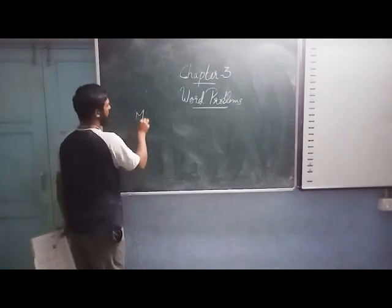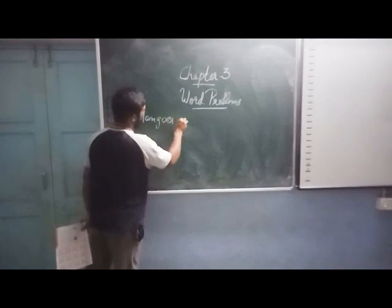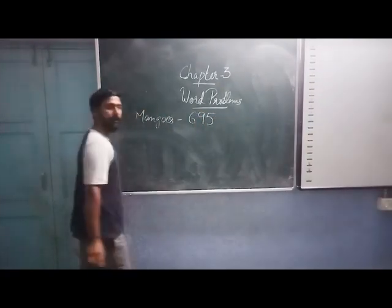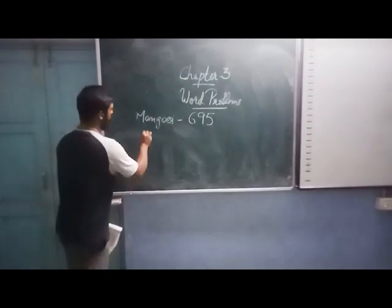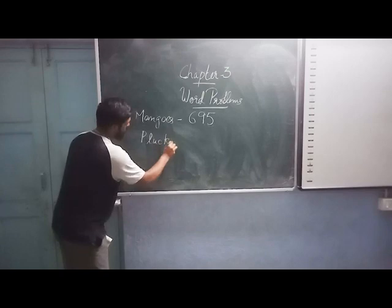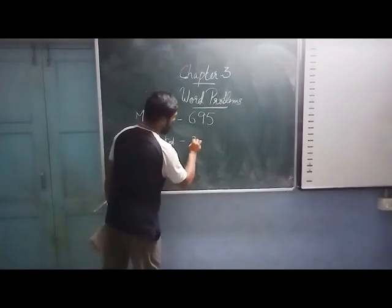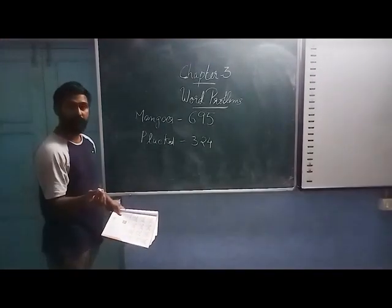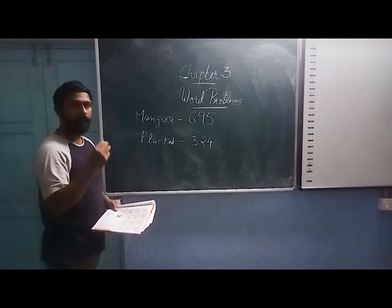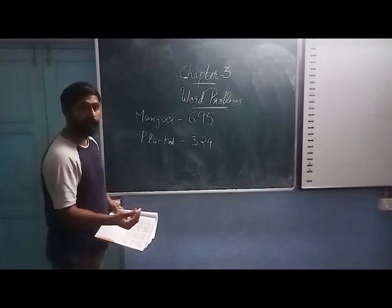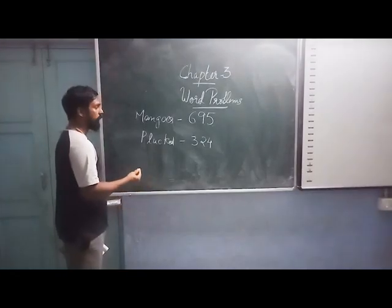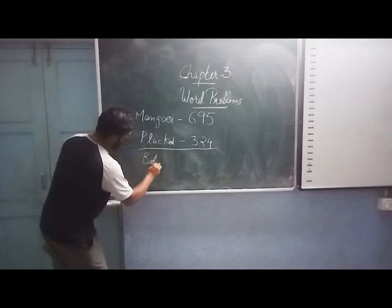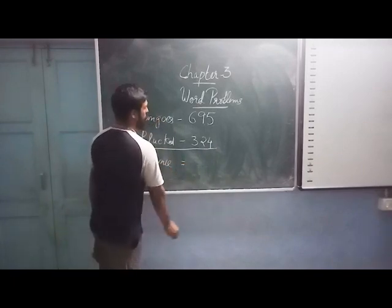There were 695 mangoes in the orchard. How many mangoes were plucked? They plucked 324. Now our question is: how many are left? The question comes from the words 'how many is left,' which means balance. In order to find out the balance, we have to use the operation subtraction. So the balance mangoes in the orchard — which operation do we use? We subtract the mangoes that were plucked from the total mangoes.